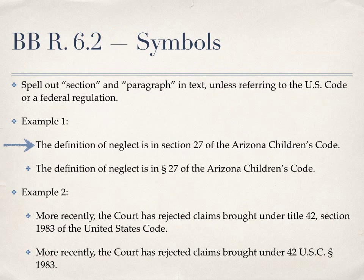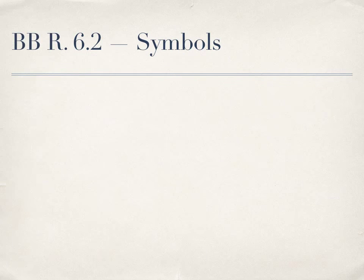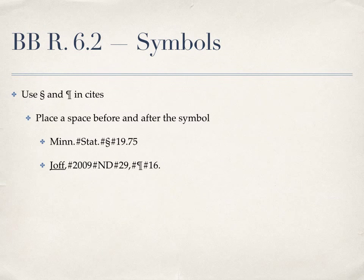If you want to refer to Title 42, Section 1983 of the United States Code in your sentence, you would place the title number first, then U.S.C. — all closed up with periods — then the section symbol, and end with the section number. Note that there is a space before and after the section symbol. When referring to paragraphs or sections in a citation, you should use the symbols, and place a space before and after the symbol.